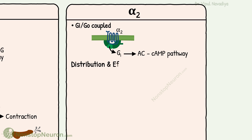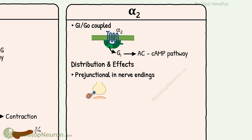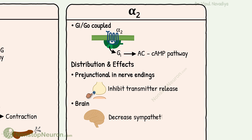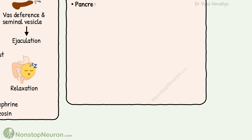Let's see the distribution of alpha-2 receptors. They are mainly seen in the prejunctional membrane at the nerve ending, where they regulate transmitter release — the exact role being inhibition of release. They are also found in certain areas of the brain, where the effect is decreased sympathetic flow. They are also found in pancreatic beta cells, where their stimulation inhibits the release of insulin.